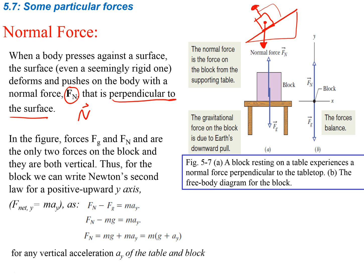In the figure, forces Fg and Fn are the only two forces acting on the block, and they're both vertical. For the block, we write Newton's second law for a positive upward y-axis: the sum of forces in the y-direction equals Fn minus Fg, which equals M·a_Y. If the block is just sitting on a table, the acceleration is zero. So Fn minus Fg equals zero, meaning the normal force equals the gravitational force. This isn't always the case, but when an object is at rest with nothing else pulling on it, the normal force equals mg.